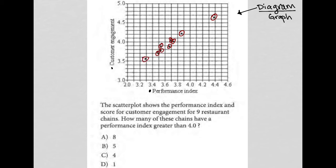So let's look at what the question actually says. The question says the scatter plot shows the performance index and score for customer engagement for nine restaurant chains. Okay, so each of those dots represents a restaurant chain.